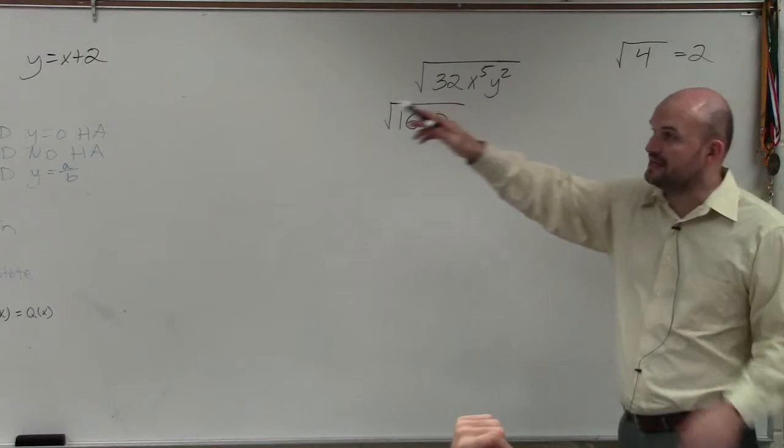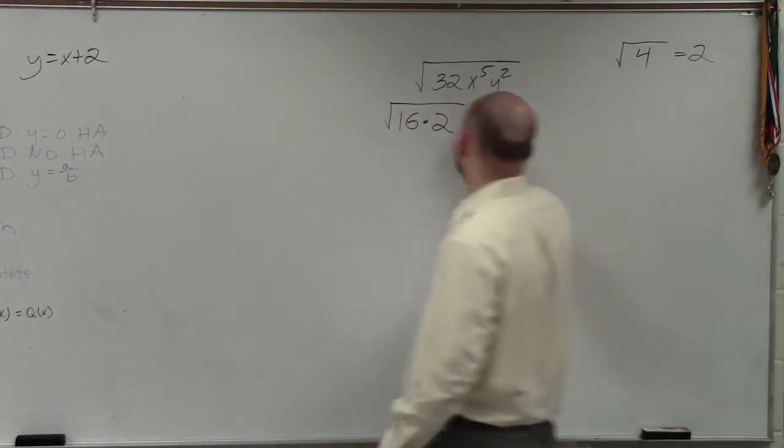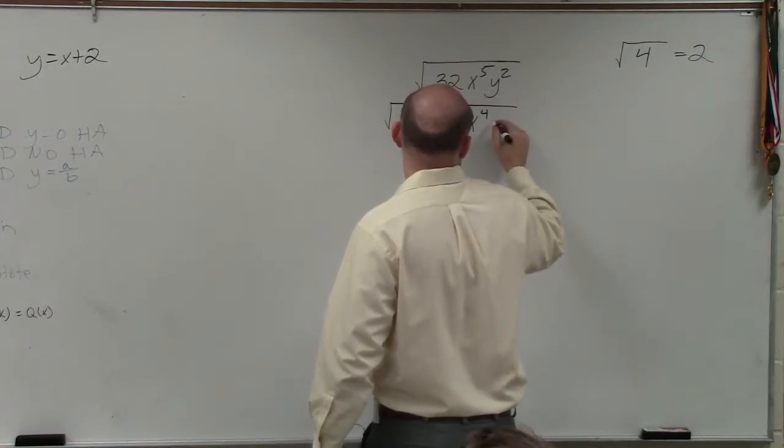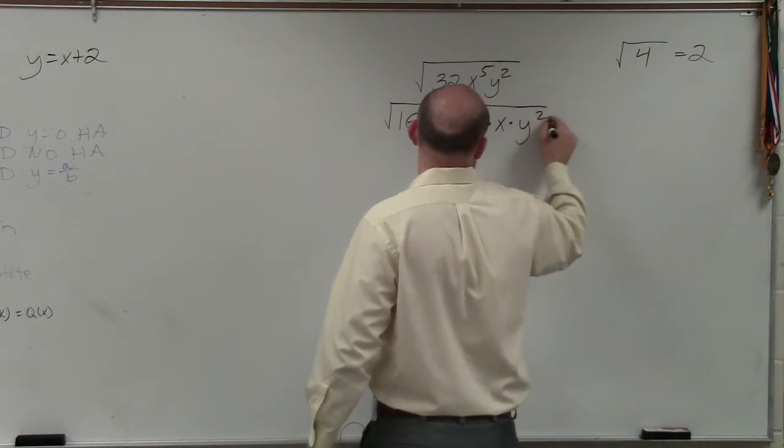Then we look at x to the fifth. I can't take the square root of x to the fifth. But I can take the square root of x to the fourth. And then I'd multiply that by x. And I can take the square root of y squared.